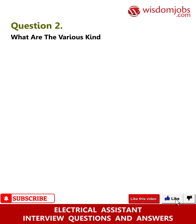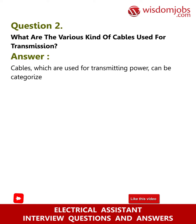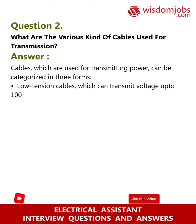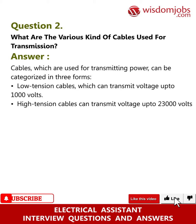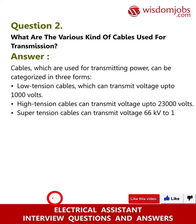Question 2: What are the various kinds of cables used for transmission? Answer: Cables used for transmitting power can be categorized in three forms: low tension cables, which can transmit voltage up to 1,000 volts; high tension cables, which can transmit voltage up to 23,000 volts; and super tension cables, which can transmit voltage from 66 kilovolts to 132 kilovolts.